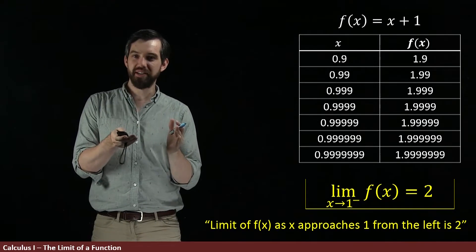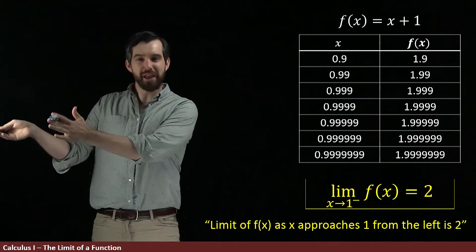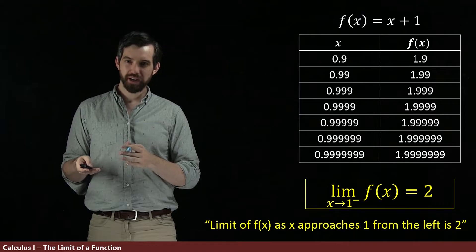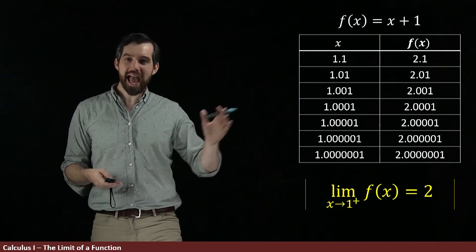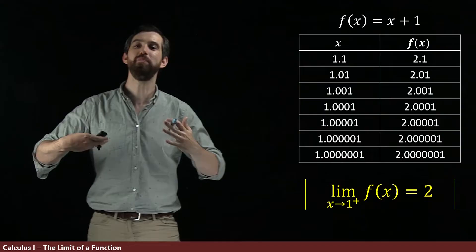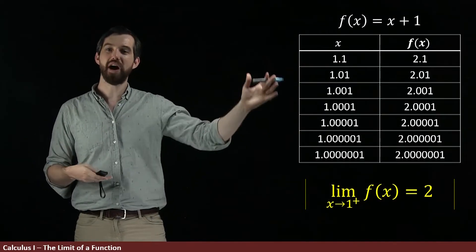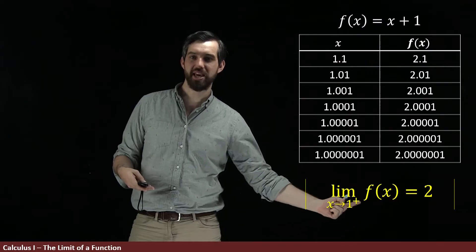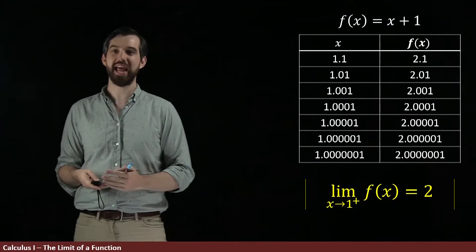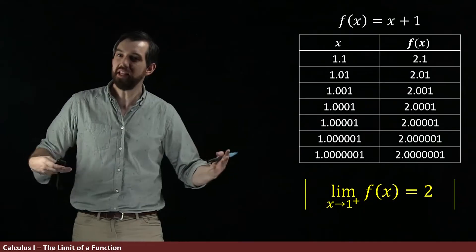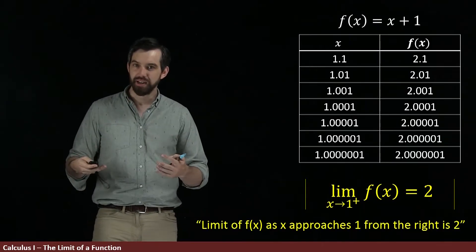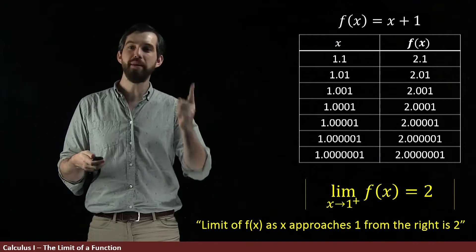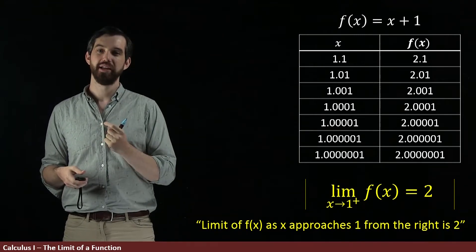That was what happened looking to the left of point 1. But what happens if we instead look to the right? I want to take x values that are all just a little bit bigger than my value of 1. I denote this by a 1 with a positive in the superscript. This is talking about going off to the right, and I read this as the limit of my function as x gets really, really close to 1, but from the right, as being equal to 2.